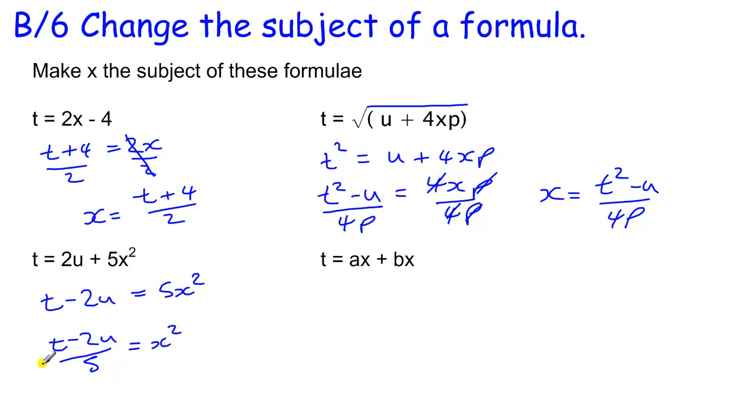To find x, I need to do the square root of both sides. And that would cancel this squared with this square root to leave me with x equals the square root of t minus 2u over 5.